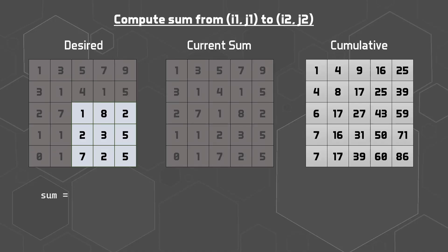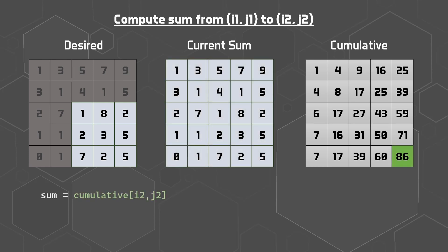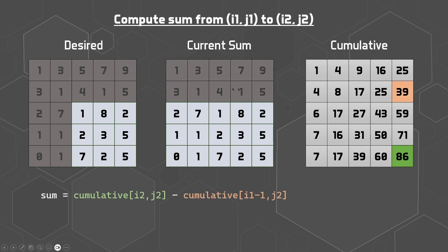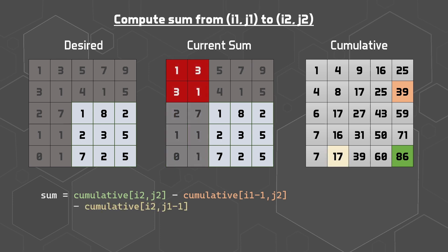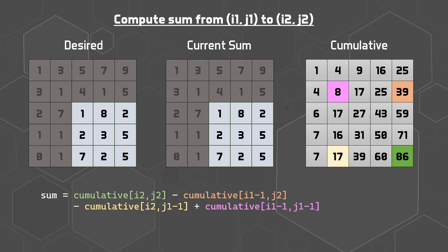To get a sum from any rectangular subgrid, take the sum from the lower right corner. From it, subtract the sum from above the upper right corner — this removes all values above the subgrid. Then subtract the sum to the left of the bottom left corner — this removes all values to the left. The problem is you've double-subtracted the space above and to the left of the upper left corner, so add that value back in. This is a surprisingly simple way of making a potentially very expensive operation much cheaper. By taking some time and memory upfront to build a more convenient data structure, you end up with great savings down the line — amplified by the fact that you're doing many queries, each benefiting from this optimisation.